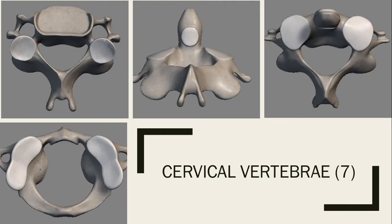A few terms you'll want to know with this. There is the atlas bone and the axis. These two pictures are showing the axis. This is an anterior view and this is a superior view — this might be a posterior view. And then just a normal cervical vertebrae, so this is your first cervical vertebrae and the second.